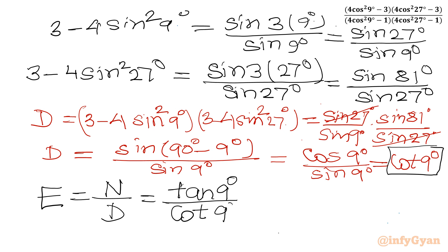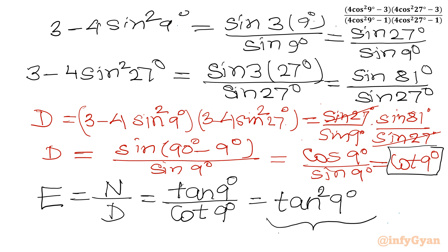Now the final step: E = N / D = tan9° / cot9°. Since cot = 1/tan, this equals tan9° × tan9° = tan²9°. This is our final simplification. Thank you friends for watching — don't forget to like, share, and subscribe. Bye bye, take care!